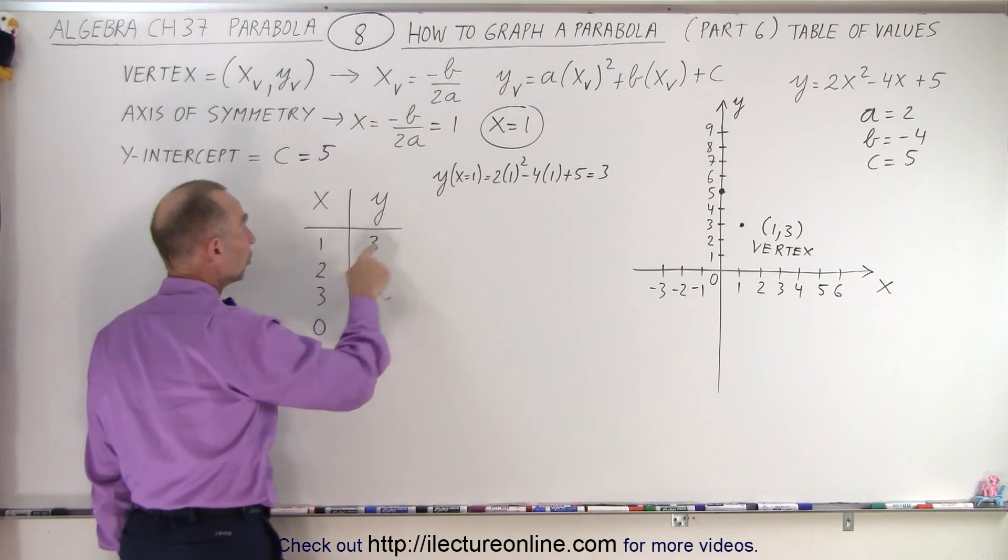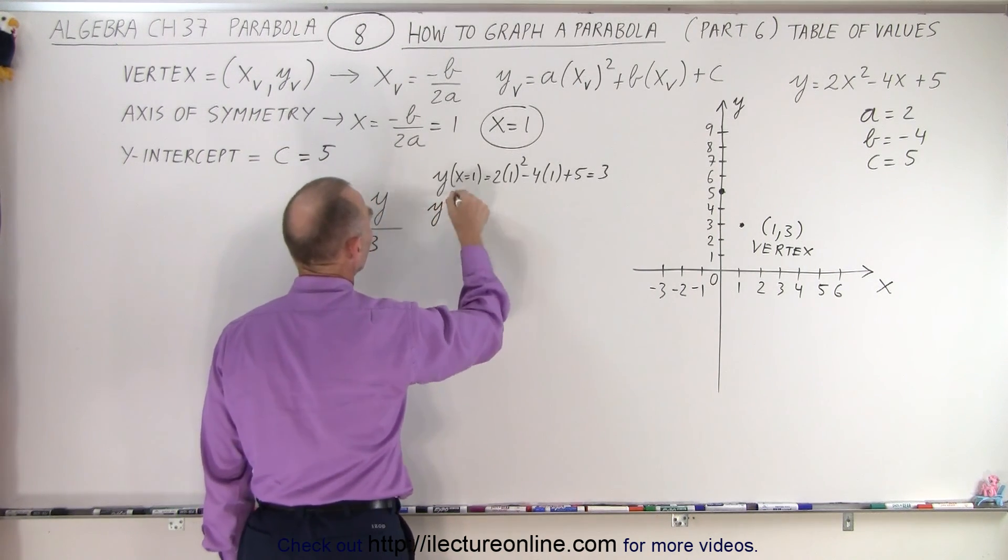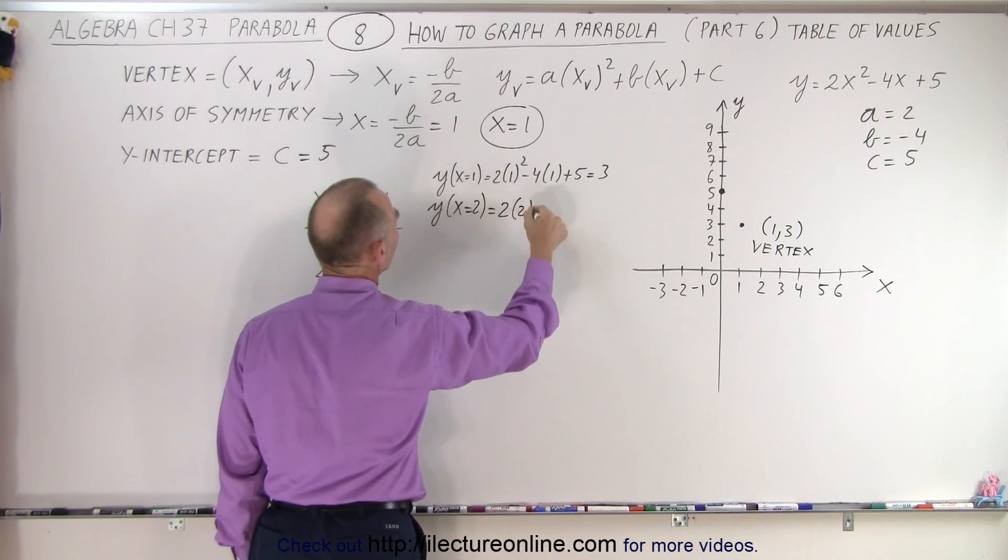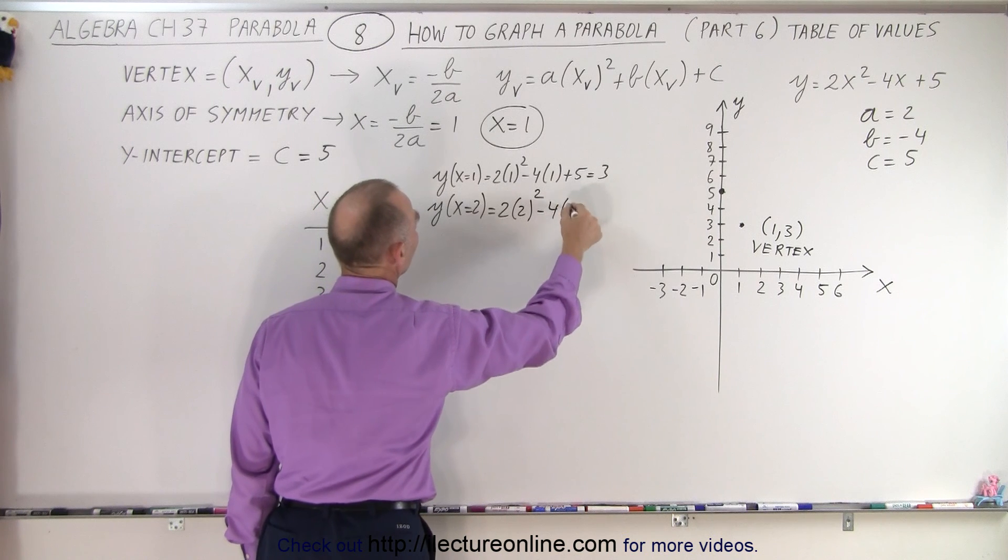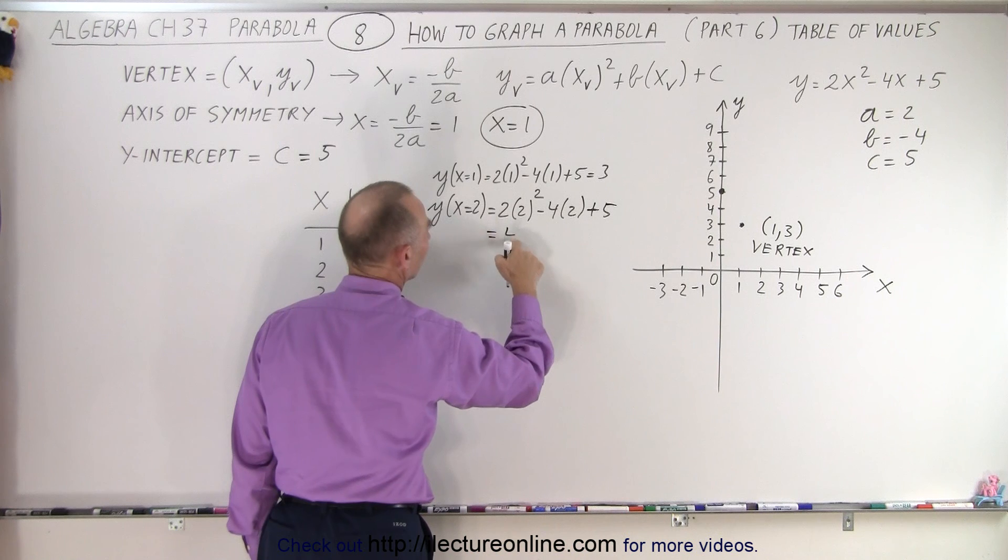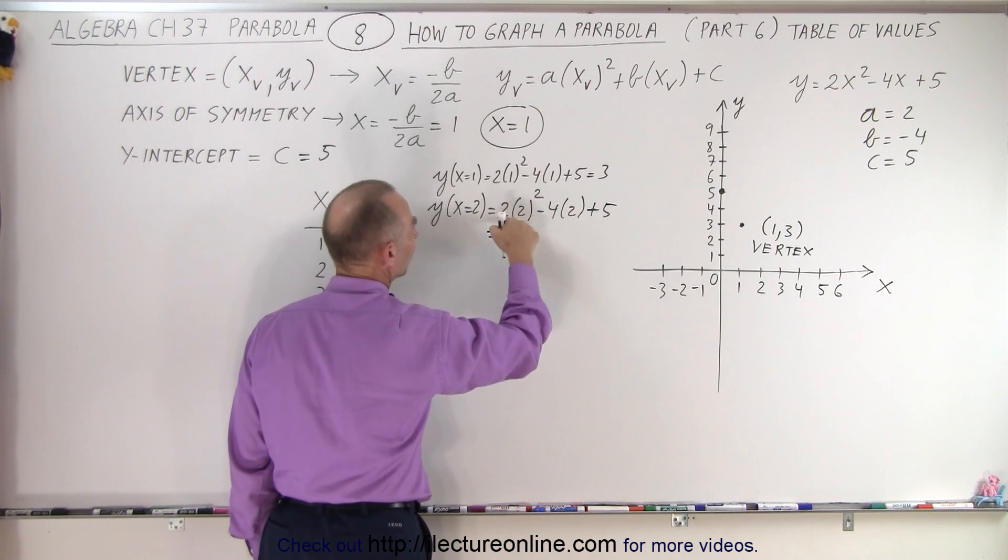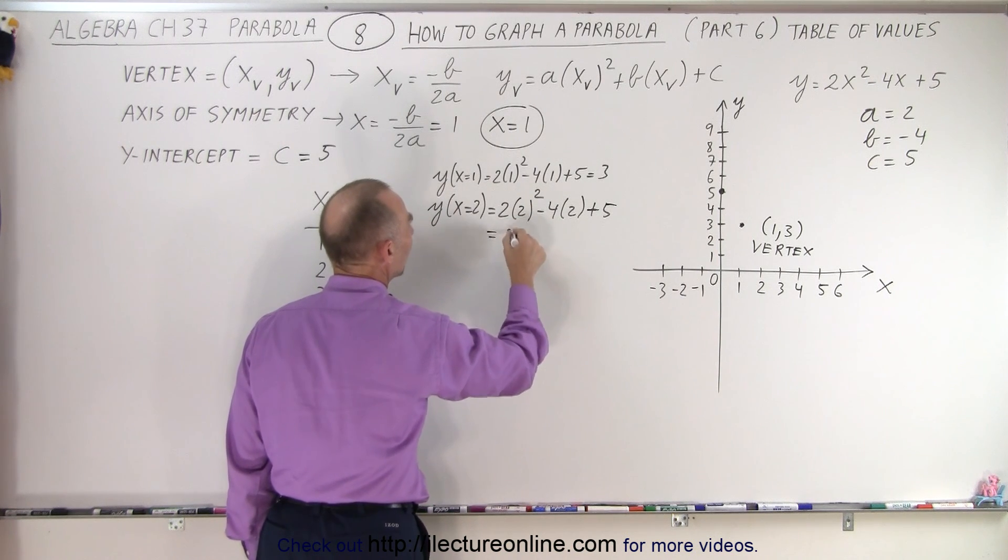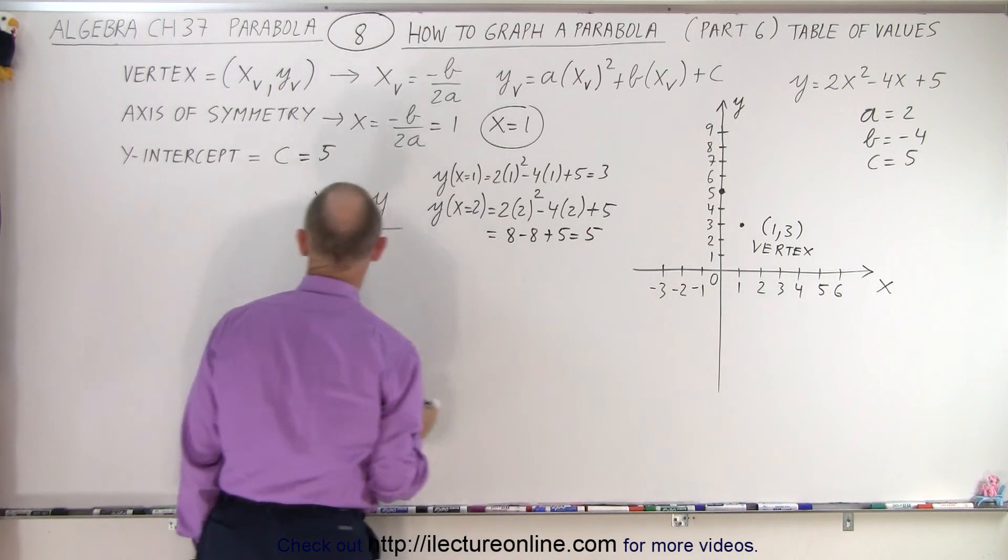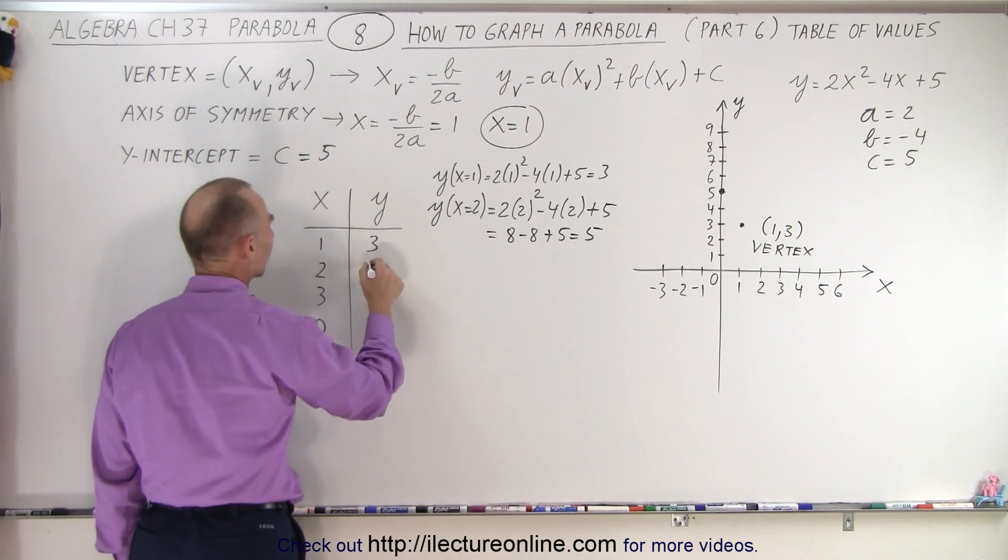When x is equal to 2, we plug that in. y, when x equals 2, is equal to 2 times 2 squared minus 4 times 2 plus 5. So this is equal to 2 squared is 4 times 2, which is 8. That's 8 minus 8 plus 5 equals 5. So when x equals 2, y equals 5.